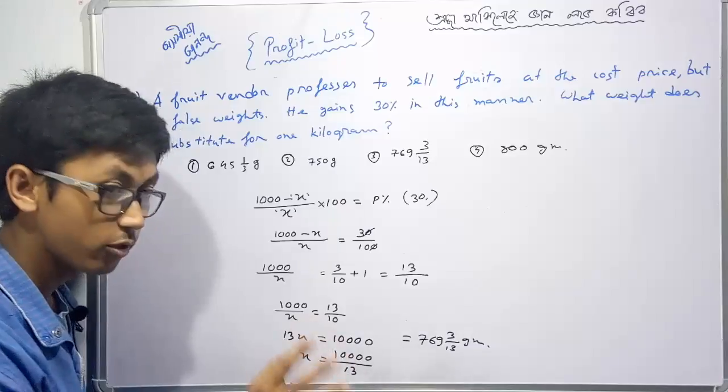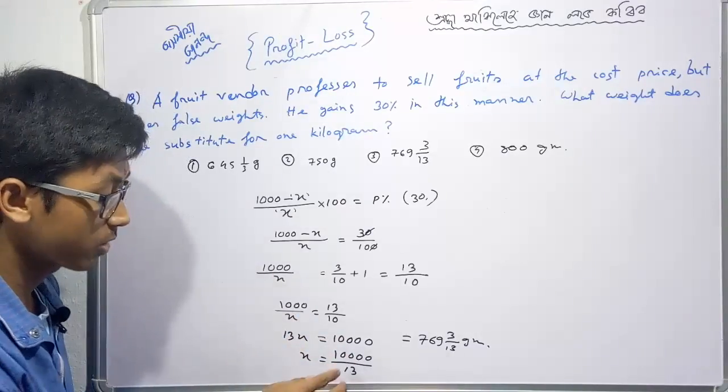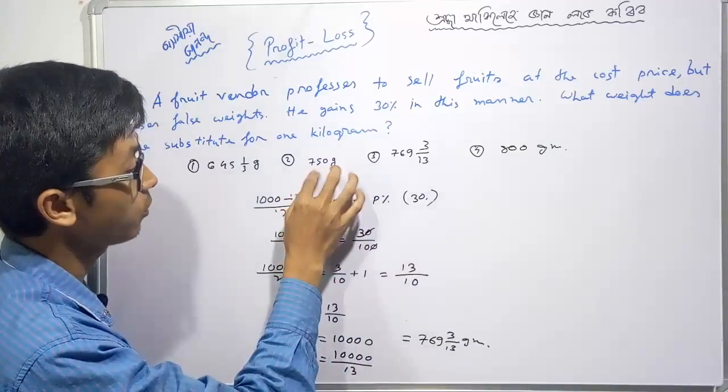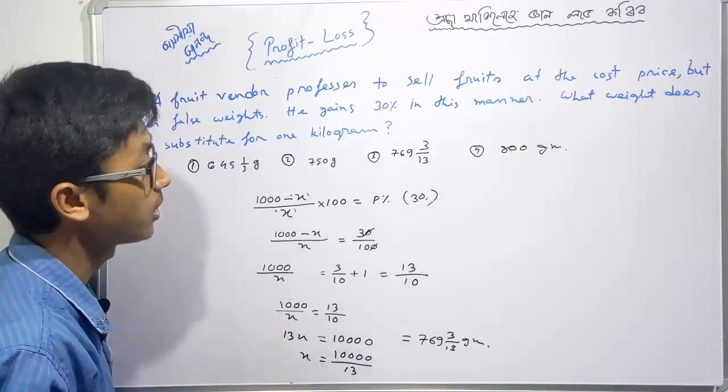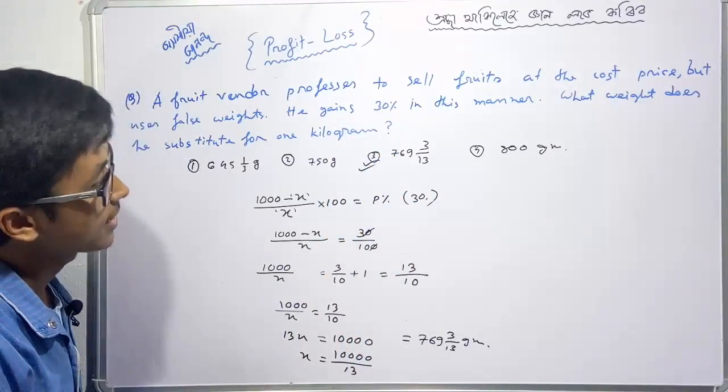The answer is 769 and 13/13 grams. That's option C - 769.13 grams. This completes our calculation for this problem.